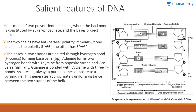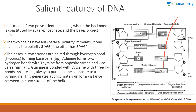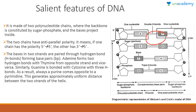Coming to the salient features of DNA. First feature: it is made up of two polynucleotide chains where the backbone is constituted by sugar and phosphate, and the bases project inward. Second feature: the two chains have antiparallel polarity — if one chain runs 5' to 3', the other runs 3' to 5'.